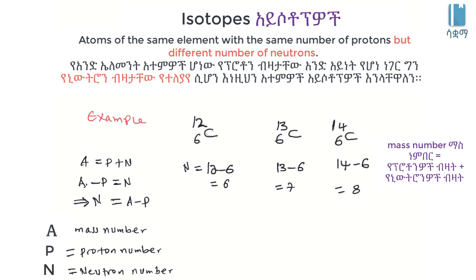The mass number identifies a specific carbon isotope. The carbon element exists in different isotope forms: Carbon-12, Carbon-13, and Carbon-14.